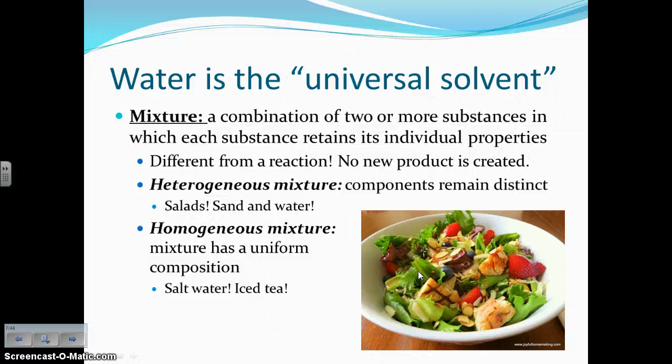There are two types of mixtures. A heterogeneous mixture is when you have the components remaining distinct, meaning they can still be separated from one another — for example, a salad, or sand and water, where the sand eventually settles and can be separated out.